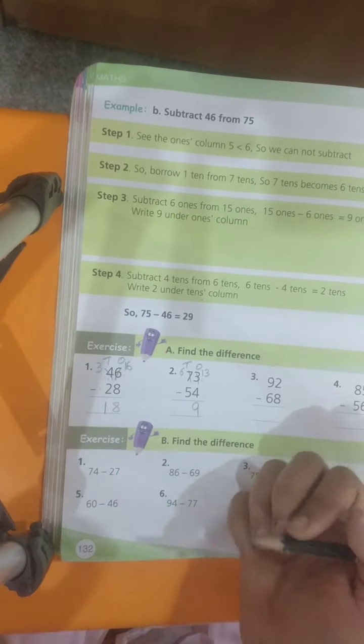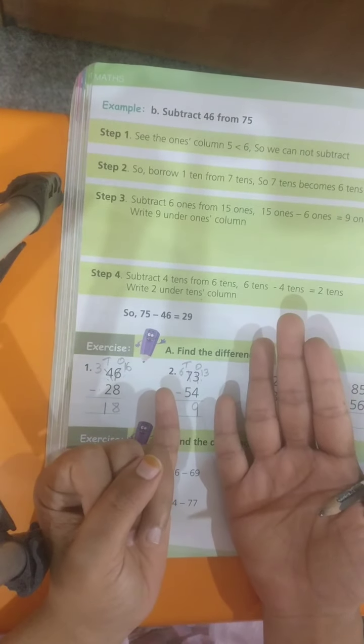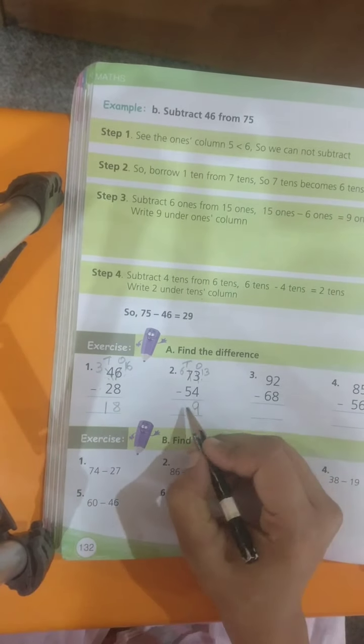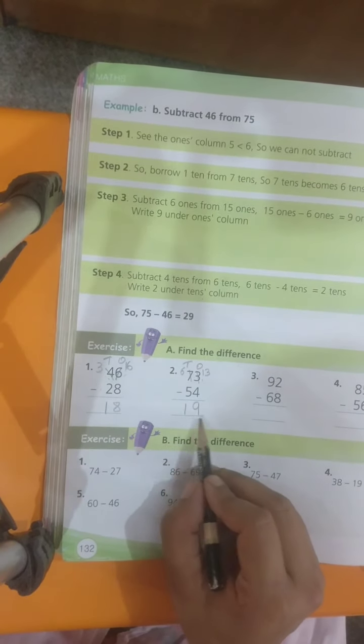Now, 6 minus 5. This I can do even by fingers. 6 fingers, 5 close. So, 1 is my answer. My answer is 19.